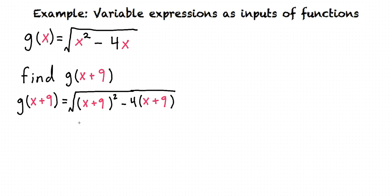And while this technically is correct, we can simplify it much further. First of all, we can square this binomial, and then we can distribute this 4 to both of the terms inside of this binomial. And this gives us the square root of x squared plus 18x plus 81 minus 4x minus 36. If that step wasn't familiar to you, review squaring a binomial and distribution.